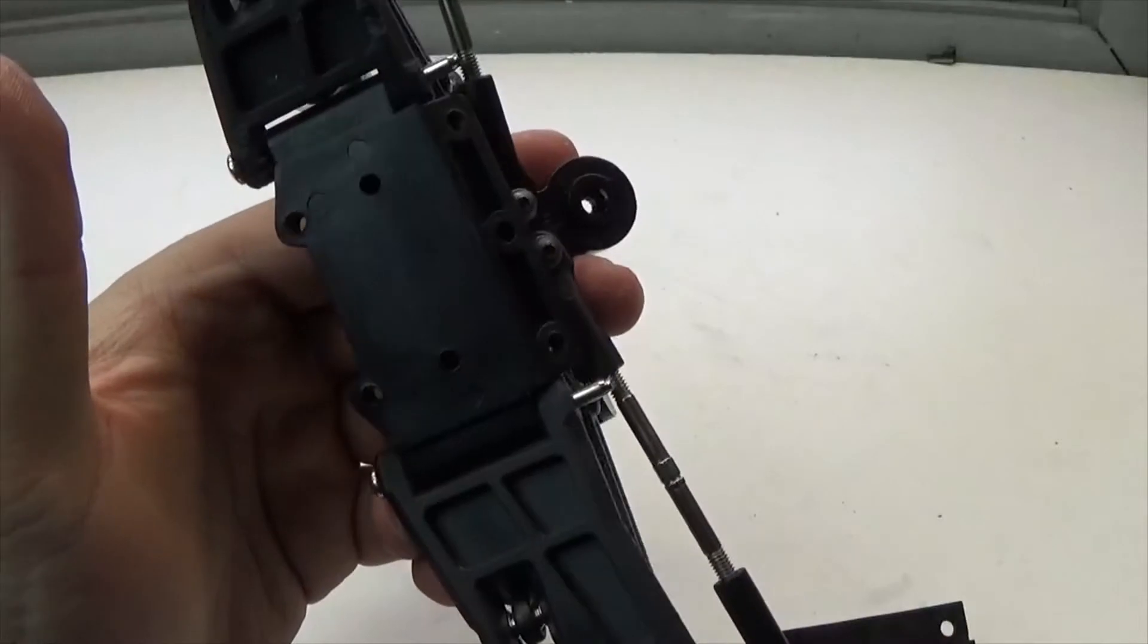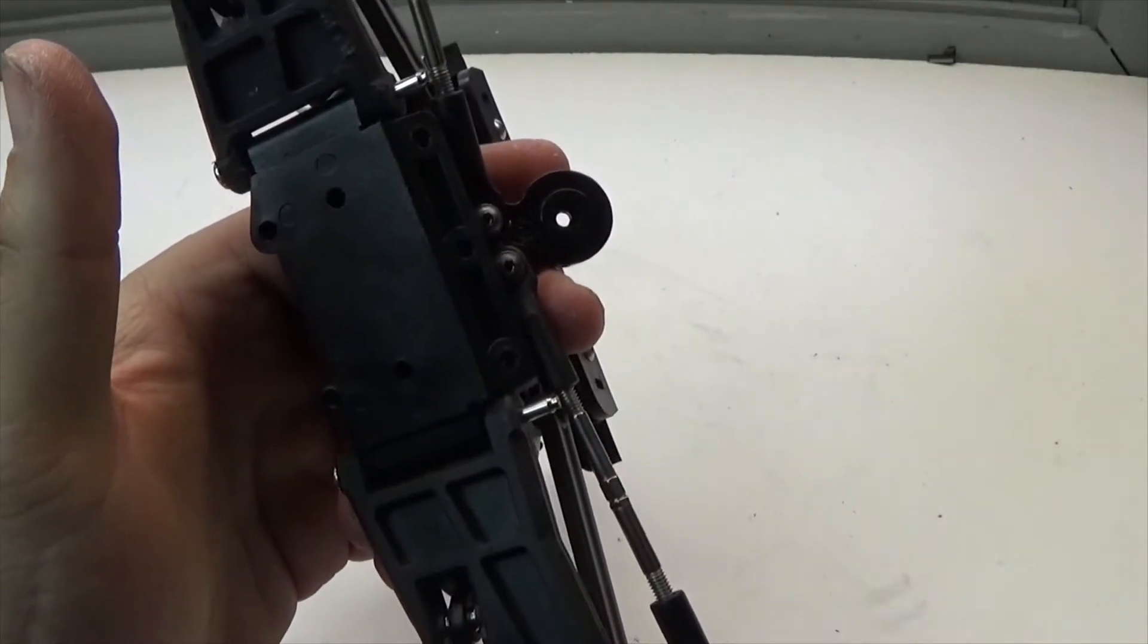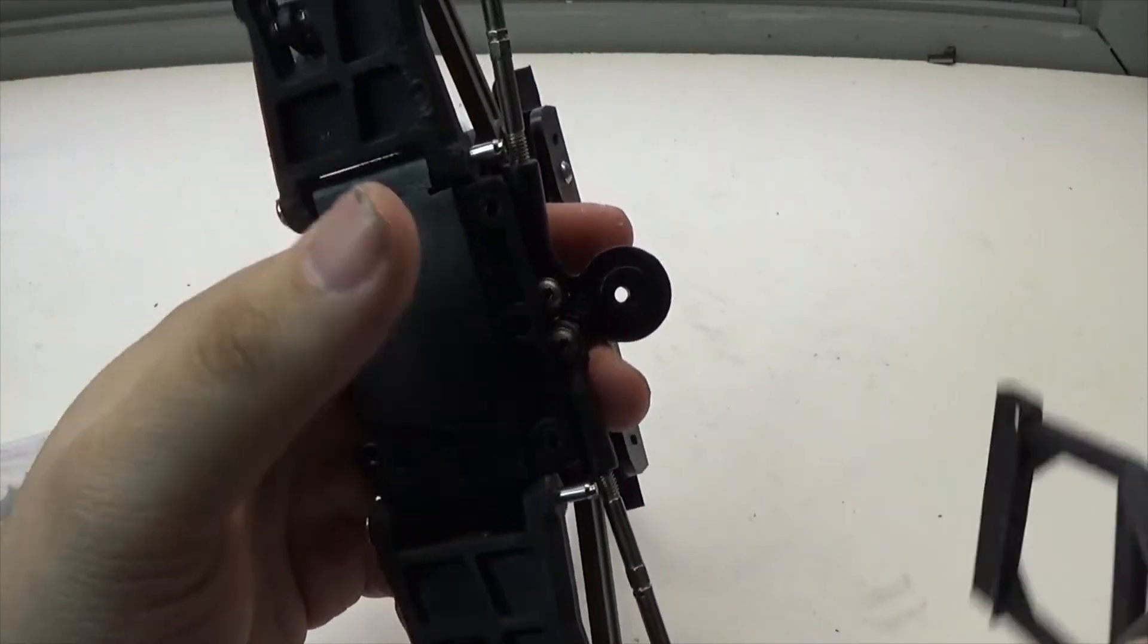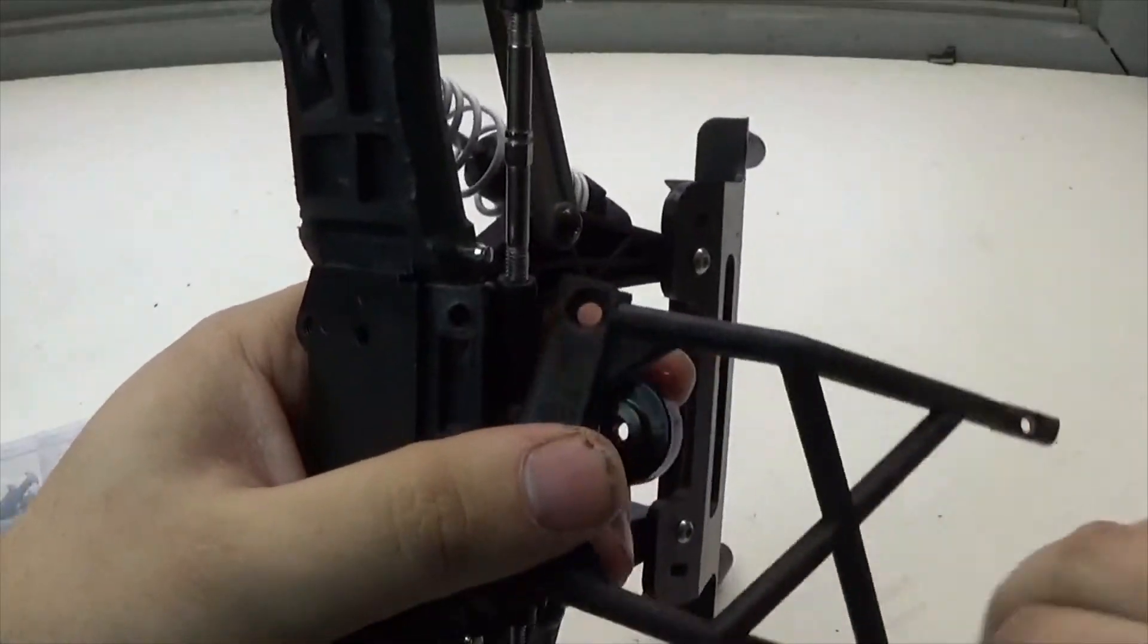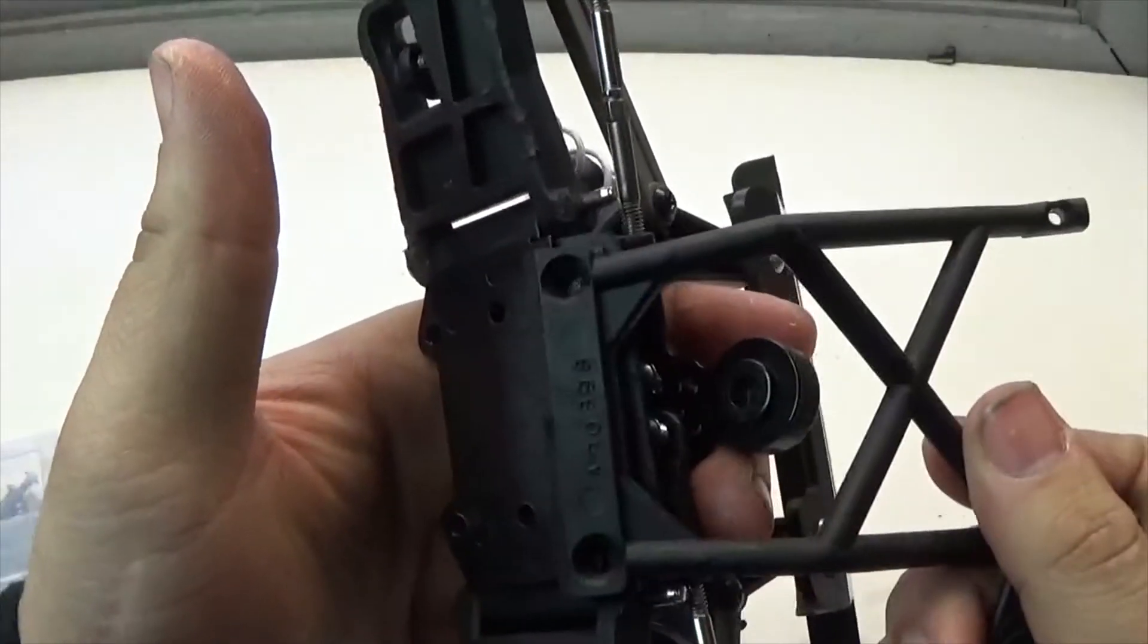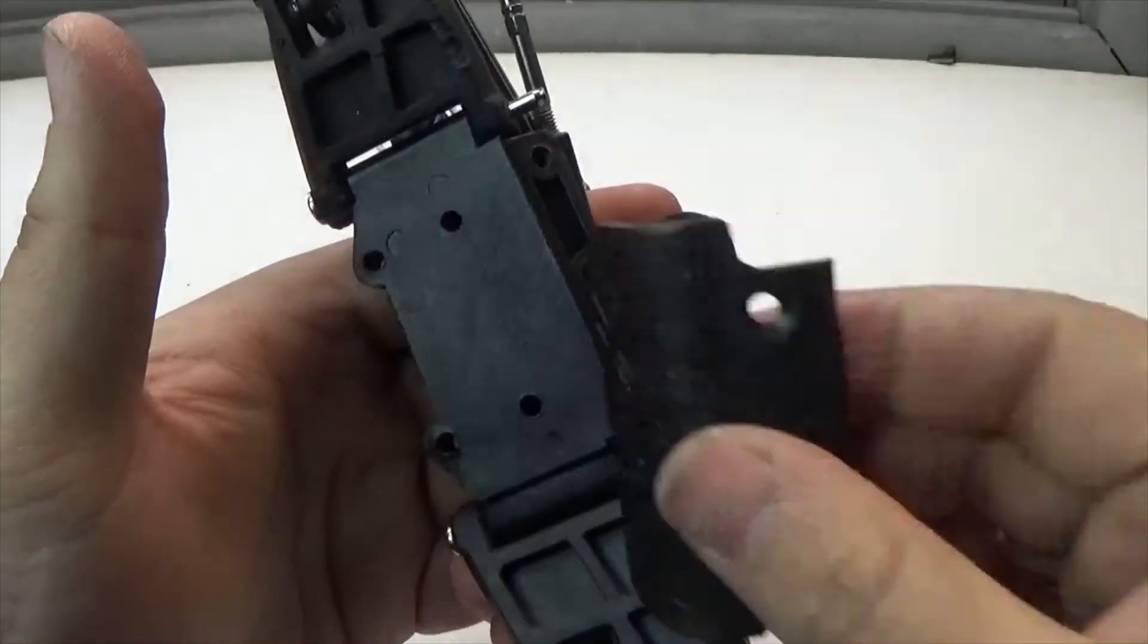The last thing I'm going to be doing for this part is going to be attaching the front skid plate, which is going to be held on with two screws, as well as the front bumper, which is also going to be held on with two screws.